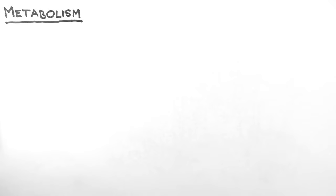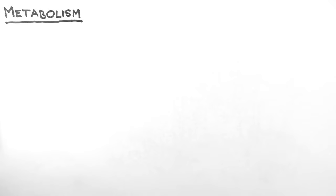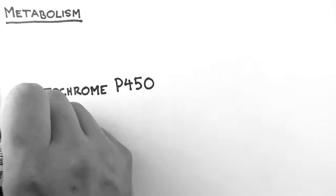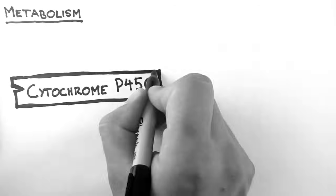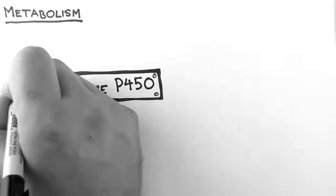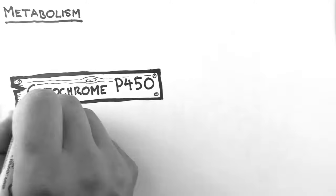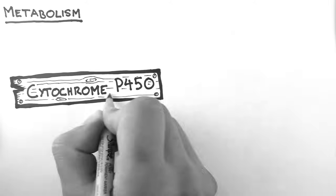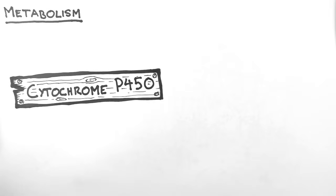Morphine is an example of this, which is why it is so often given intravenously rather than orally. However, in this tutorial I'm going to talk more about the biochemistry of drug metabolism. In particular, the actions of cytochrome P450 enzymes, which are often abbreviated CYP.